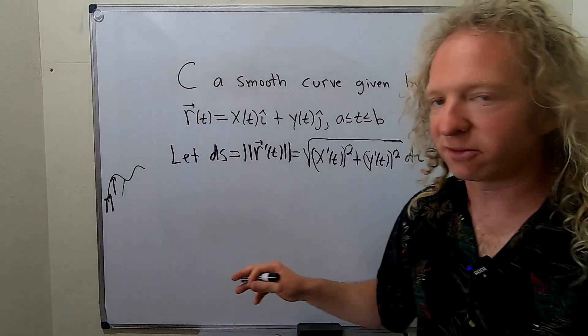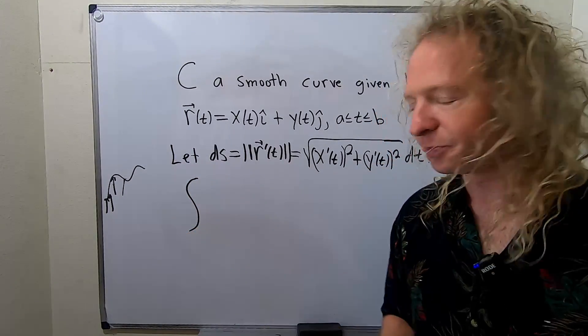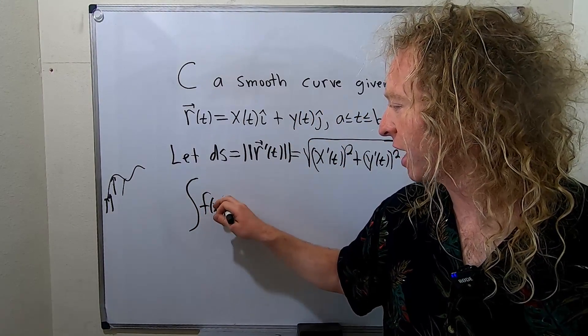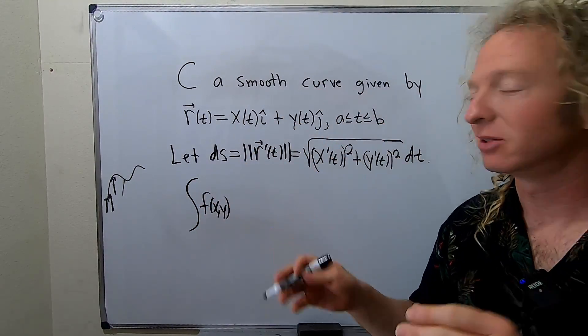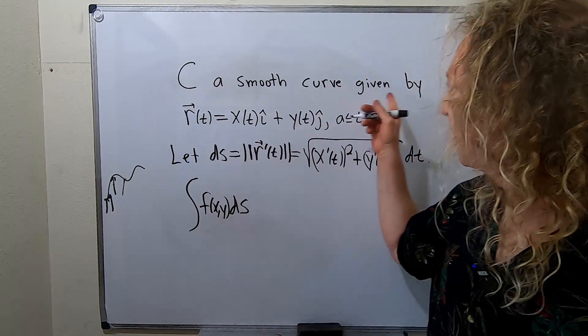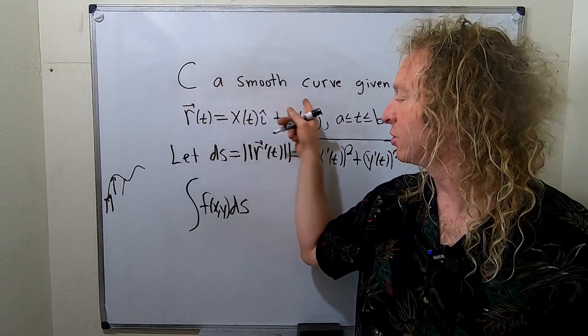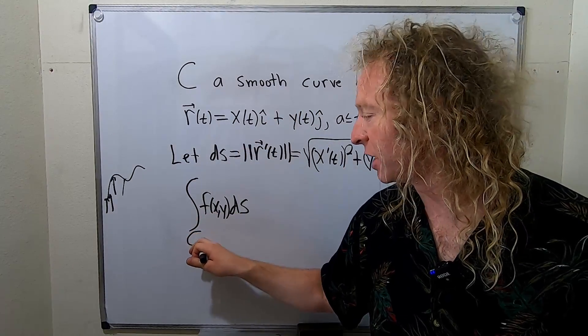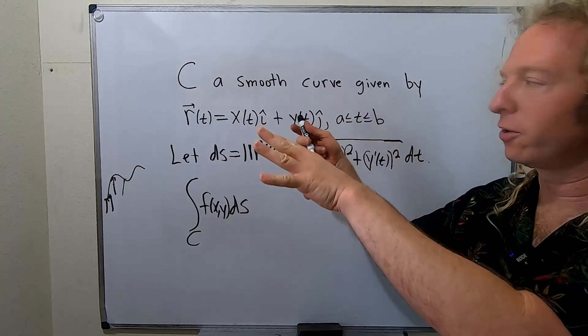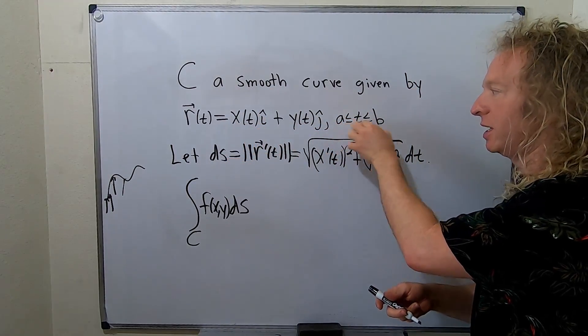Then by the line integral, we mean the following. So we write the integral symbol. We put our function f(x,y). So we're integrating f over this line. It's called the line integral. We write ds, and then we write our line. So C is a smooth curve, so it's not really our line, it's a curve. So this is called the line integral of this function over this smooth curve as we traverse from a to b.